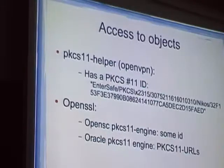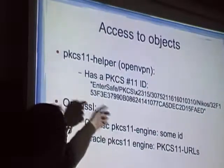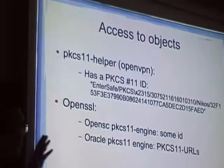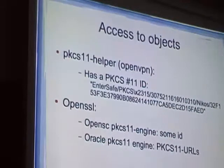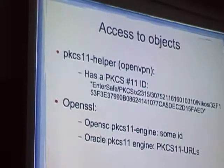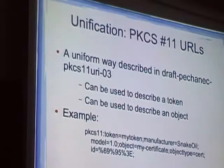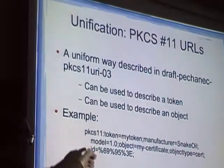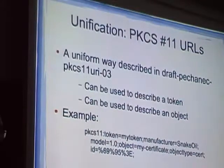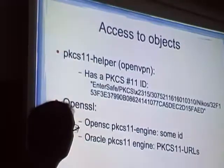Some examples: in OpenVPN, in order to specify a private key and a certificate that resides on a token, you have to specify an ID something like this. In OpenSSL, if you use the PKCS11 OpenSSL engine, it's some other different ID. But a nice thing that occurred in the OpenSC PKCS11 implementation is that they created the concept of PKCS11 URLs — a standardized way to specify tokens, standardized via IETF, specified in this draft.